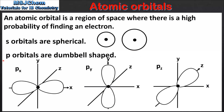Next we have P orbitals, which are dumbbell shaped. In the P sublevel there are 3 P orbitals which are labelled Px, Py and Pz. The orientation of the orbitals is at 90 degrees to each other. So to summarise: S orbitals are spherical and P orbitals are dumbbell shaped.